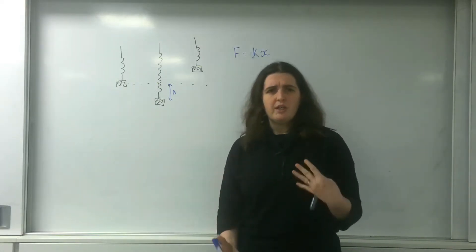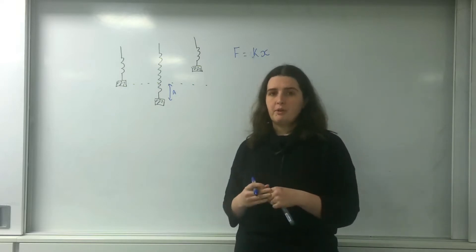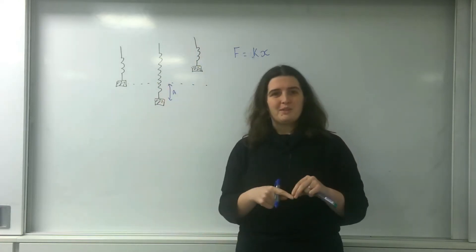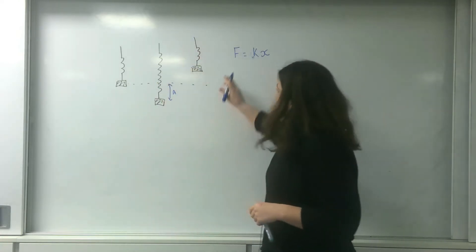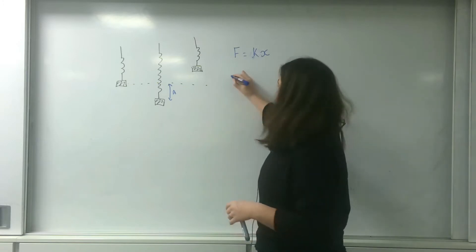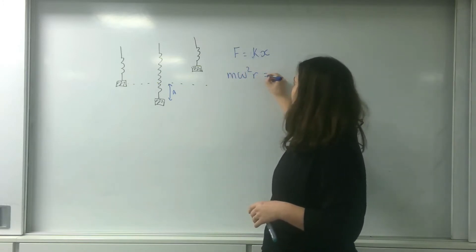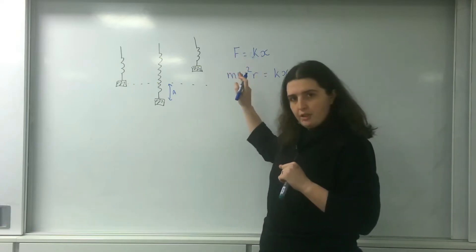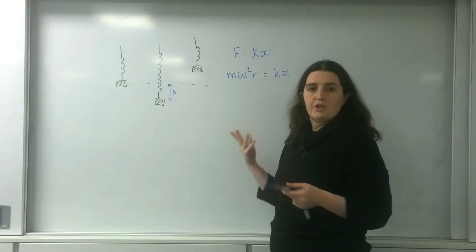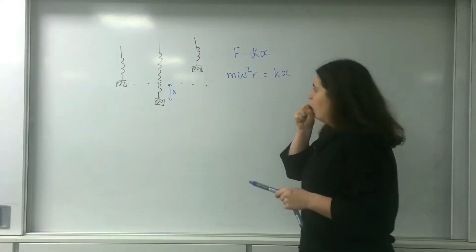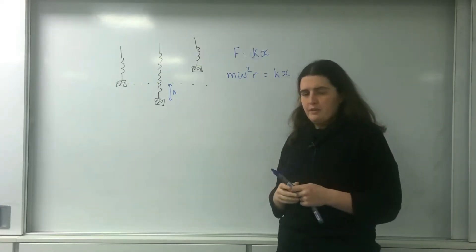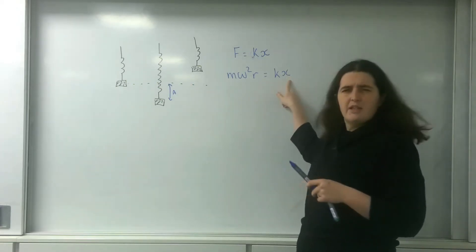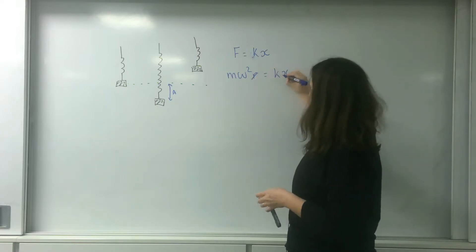I've said before that you can liken simple harmonic motion to circular motion, because it's an object that goes from one position back round to its initial position. So I'm going to equate this to the equation for circular motion: m omega squared r. The radius of this circular motion in this setup is actually the amplitude of the object, which is the extension you caused it. So these two things — the extension and the radius — are going to cancel out.